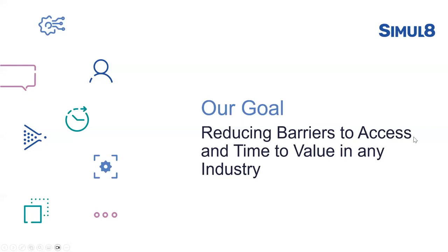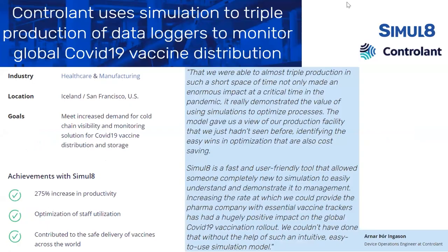We want to really reduce barriers to access and time to value in any industry. The first example is a manufacturing case — when we were working with a company called Controllant, who produced the technology to enable vaccinations to be delivered worldwide. This was a time where they needed to ramp up production really quickly because we had just got the COVID vaccination in place — a need to ramp up to almost three times the normal amount.